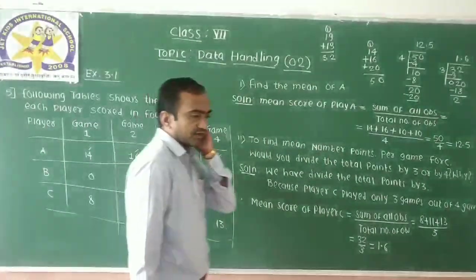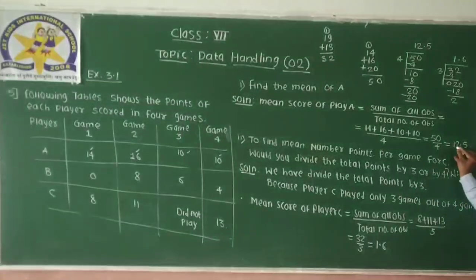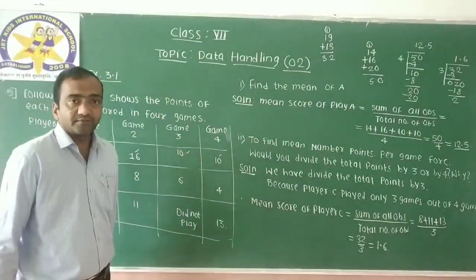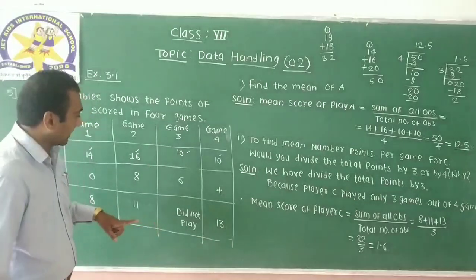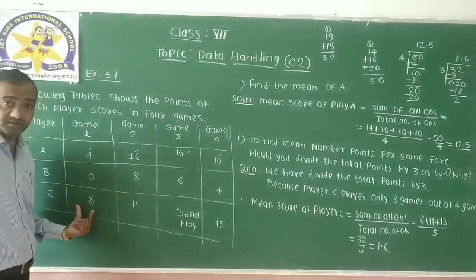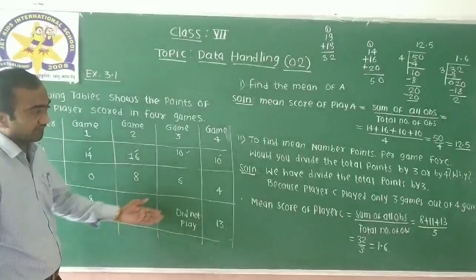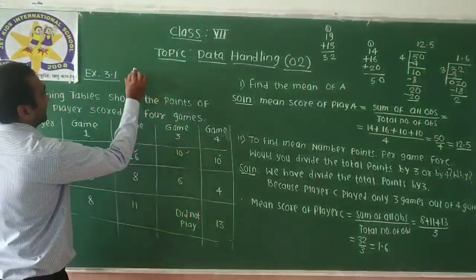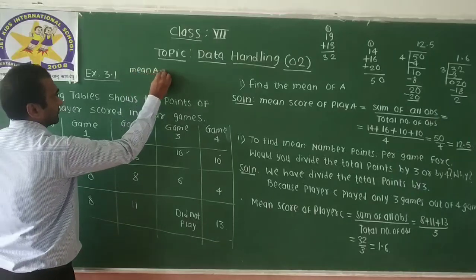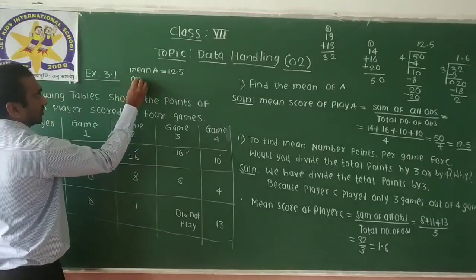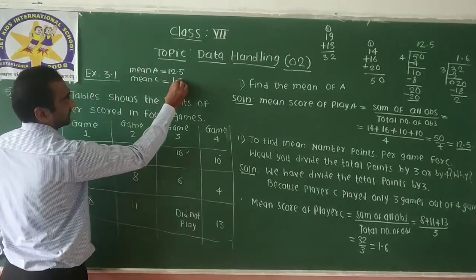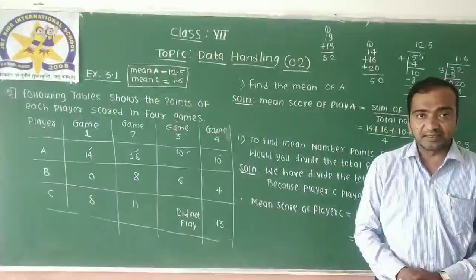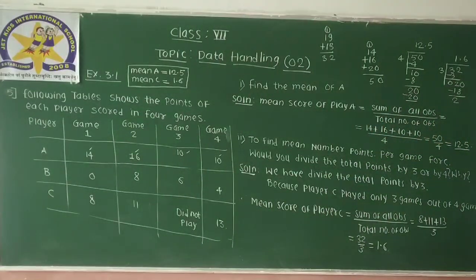So to summarize: mean score of Player A equals 12.5. For the second question, we divide the total points by 3 because Player C played only 3 games. Mean score of Player C is approximately 10.67. We stop the division there and now look at the remaining questions.